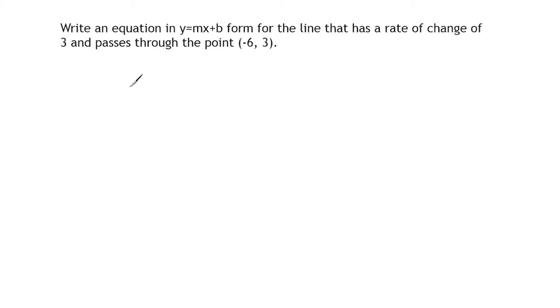In this problem, it is given that the rate of change is 3 and it passes through the point negative 6, positive 3. Now the first thing that we're going to do is write our equation y equals mx plus b. When writing our equation, we are really just looking for the m value and the b value. The m is our slope and the b is where the line intersects the y-axis.